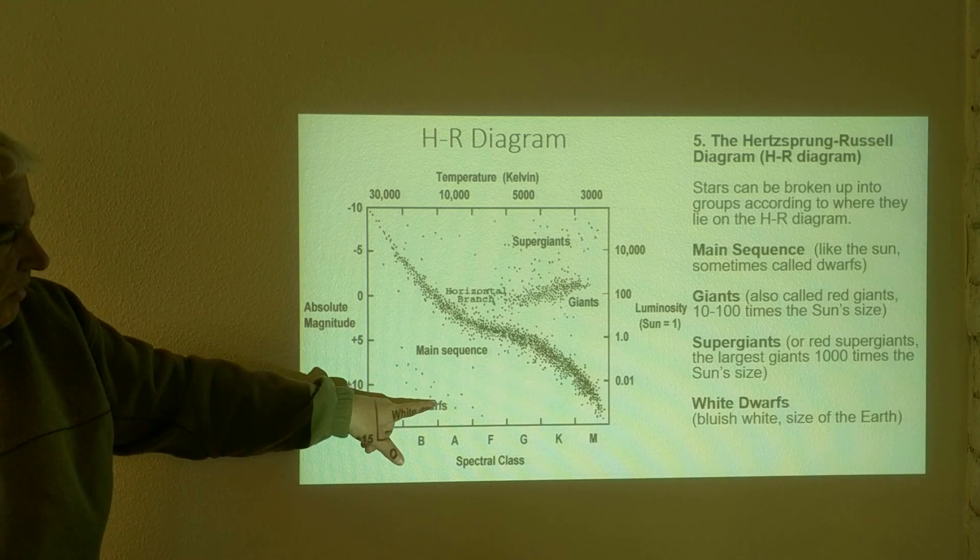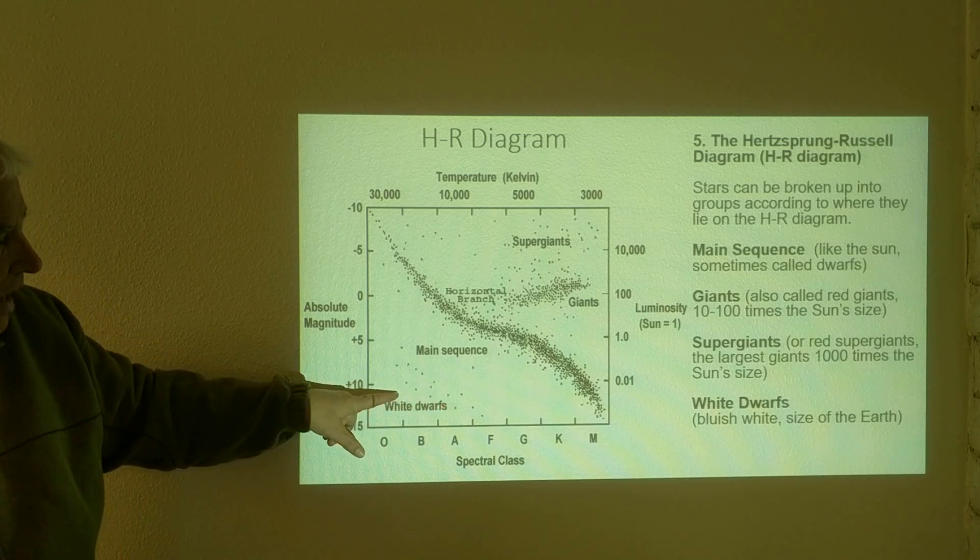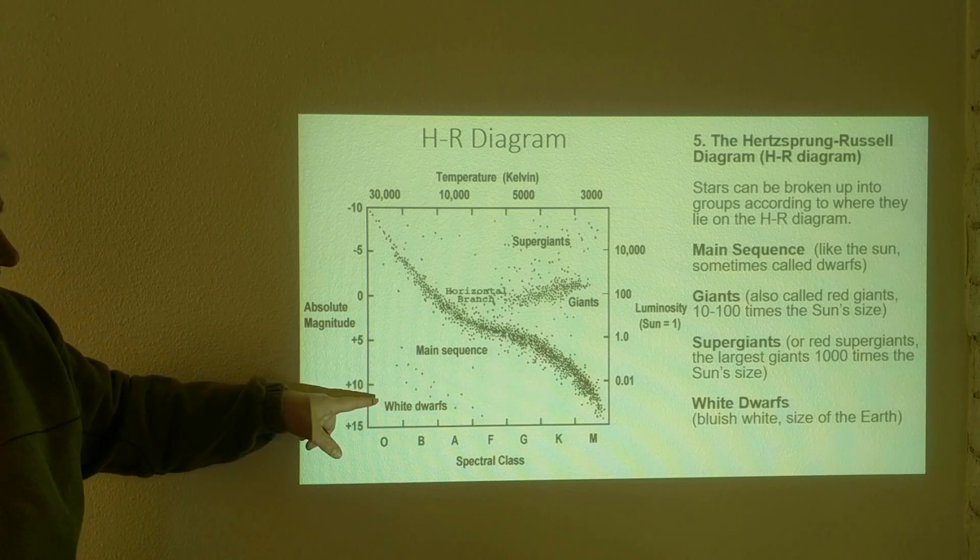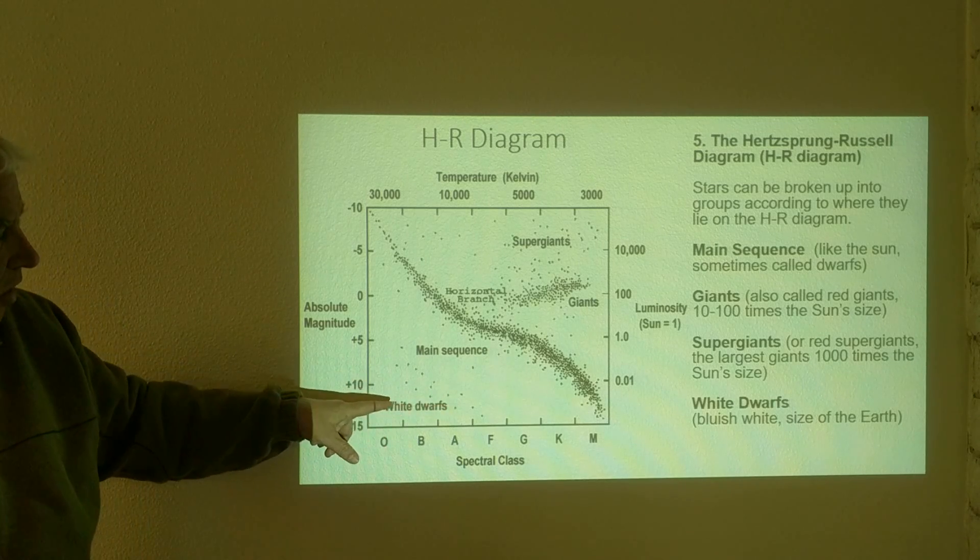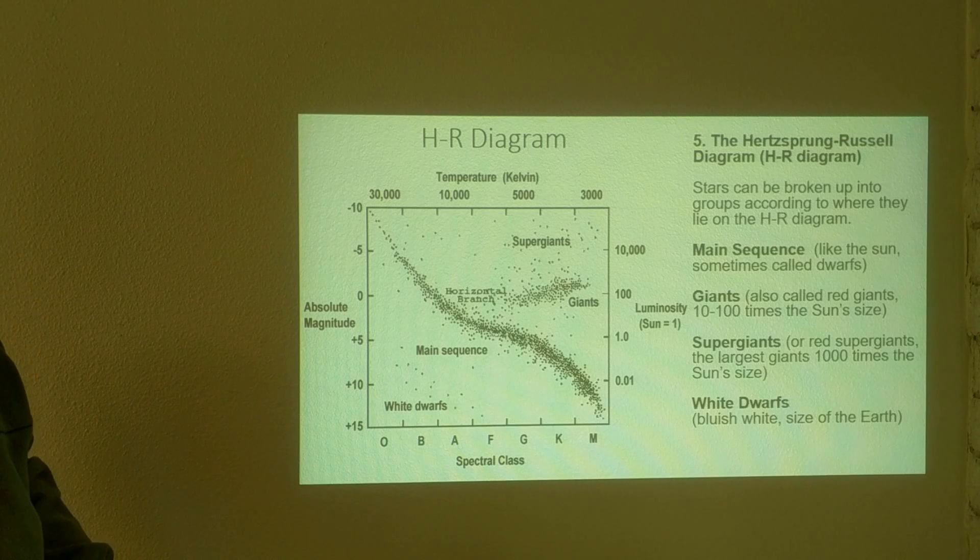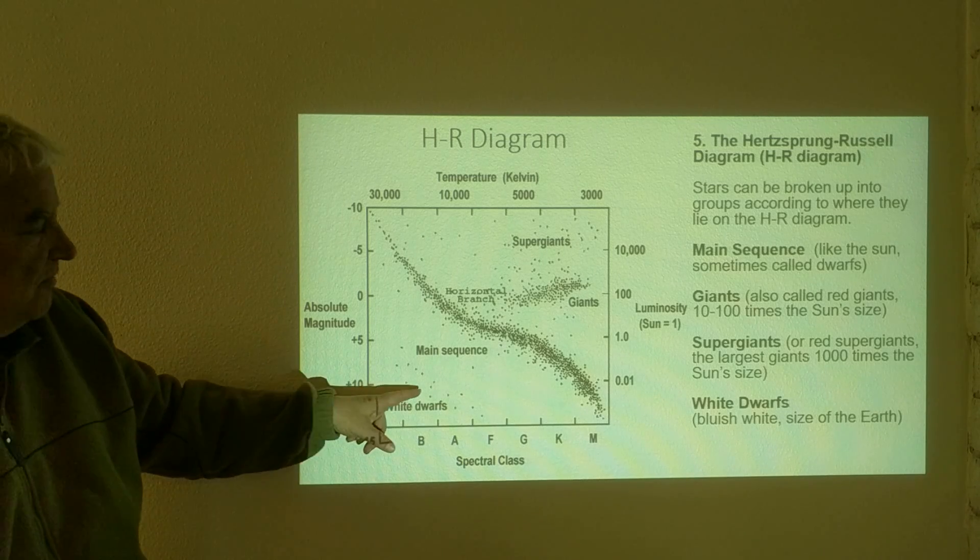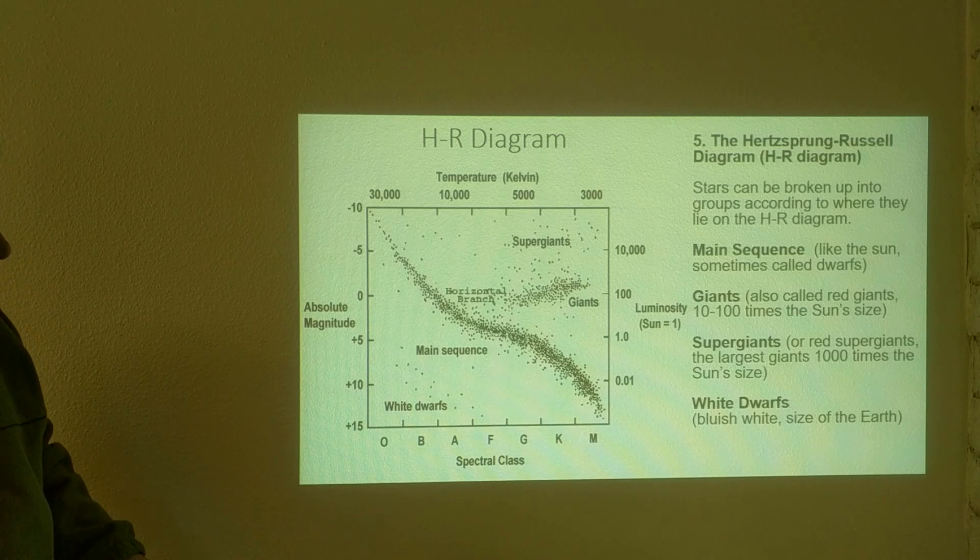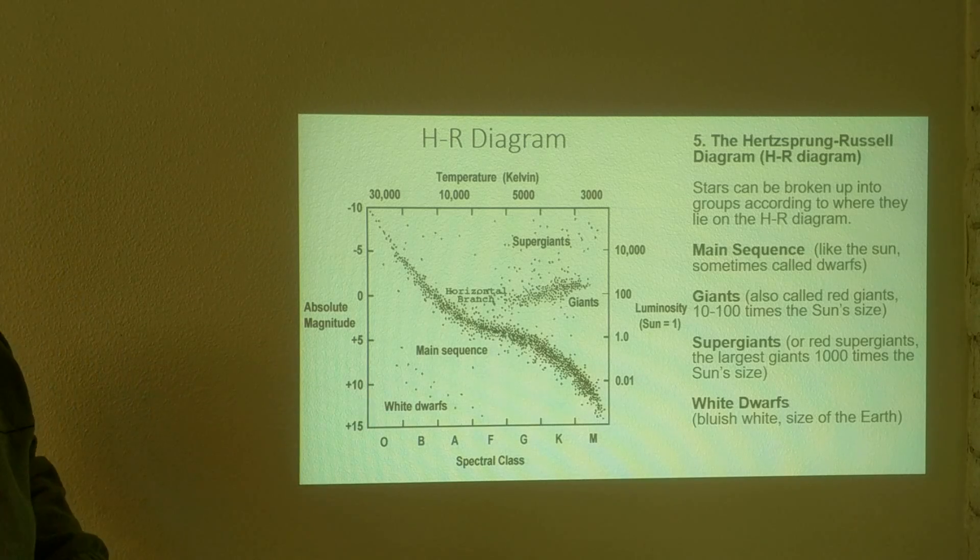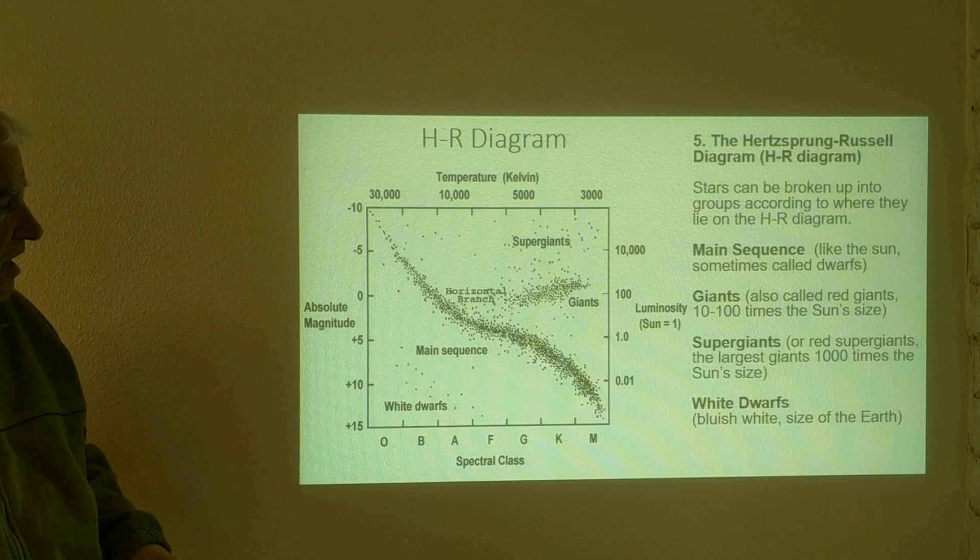Over here in the bottom left corner, we have white dwarfs. These are bluish white stars and they are very small. They're about the size of the earth or only about one percent the size or radius of the sun.